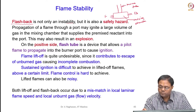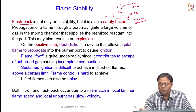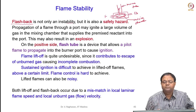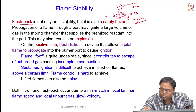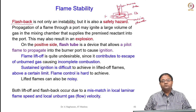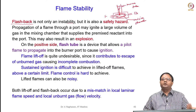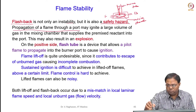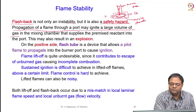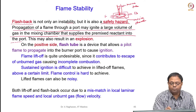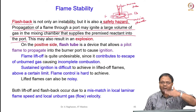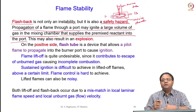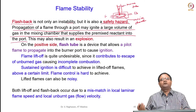Flashback is dangerous because it is not just an instability — it is a safety hazard. For example, normally you have a mixing chamber where fuel and oxidizer are supplied and mixed, connected to a burner tube. When the flame comes down it will see a large volume of reactants in the mixing chamber and ignite it. Propagation of a flame through a port or burner may ignite a large volume of gas in the mixing chamber that supplies the premixed reactants.